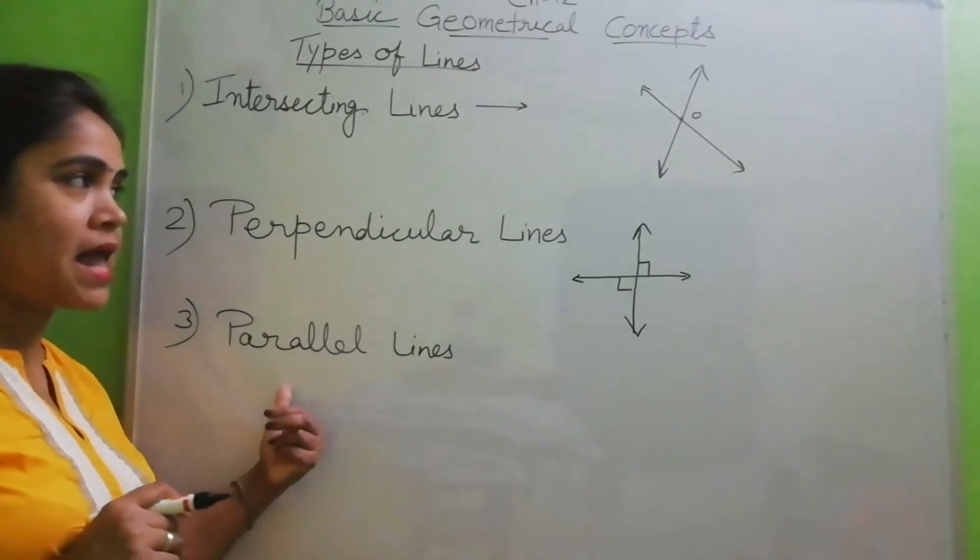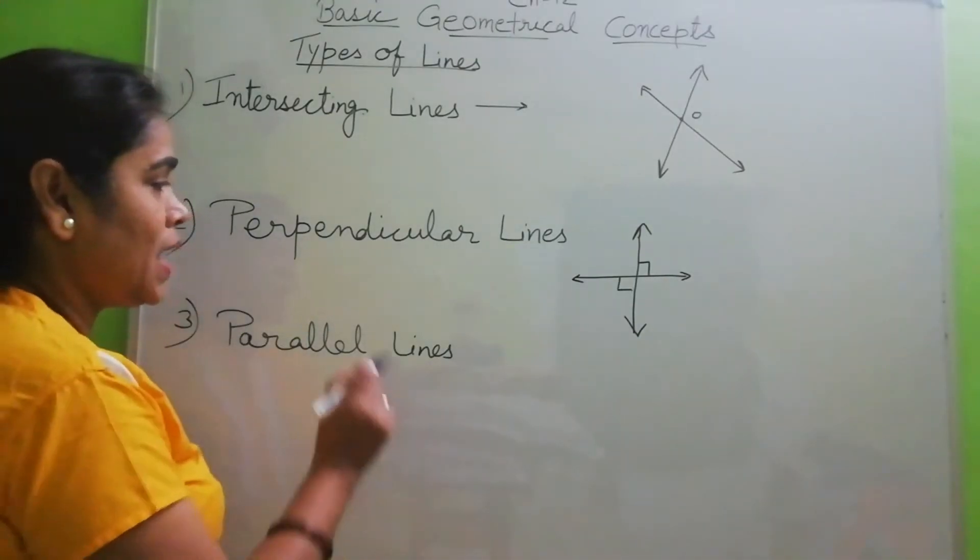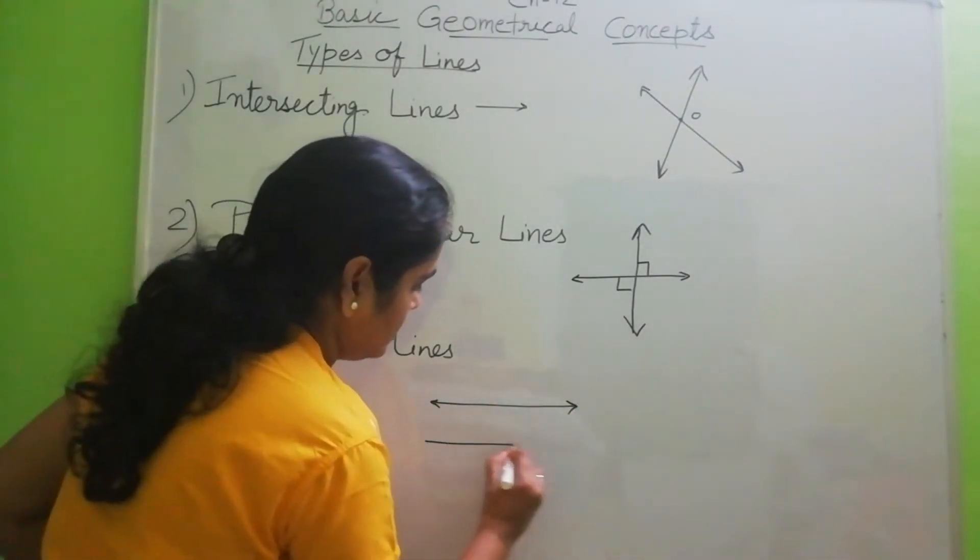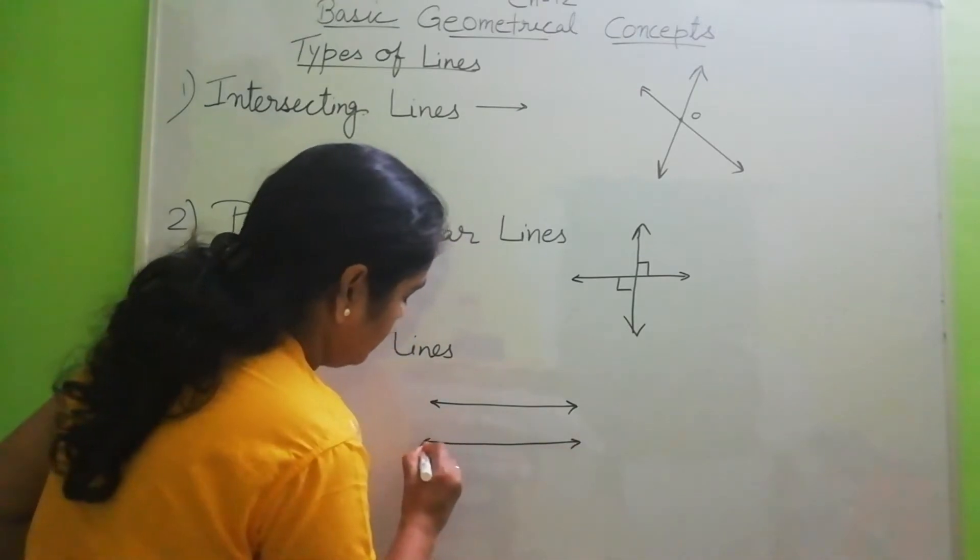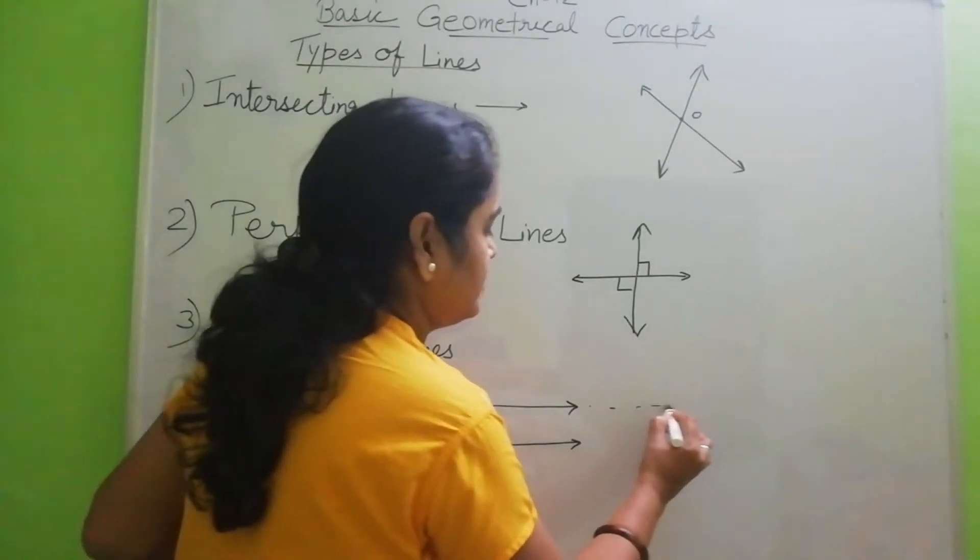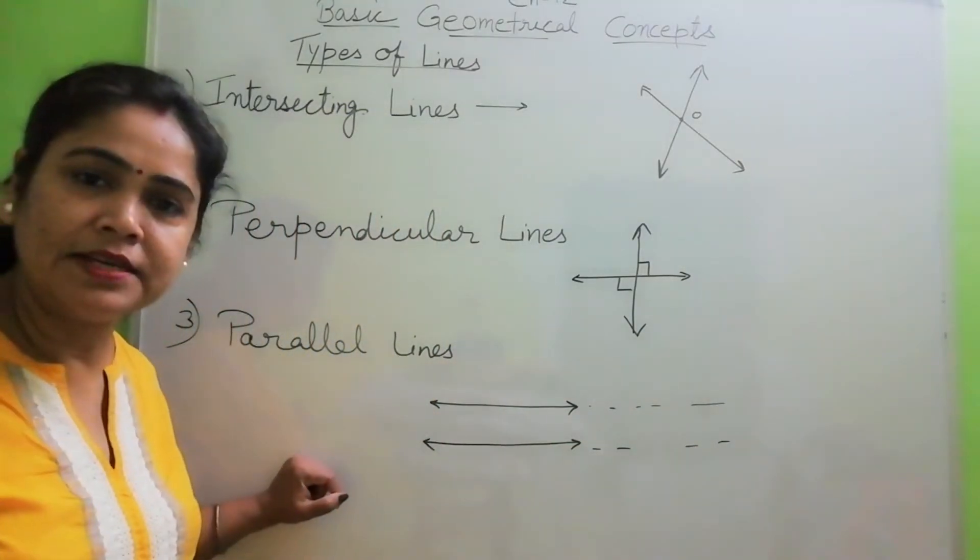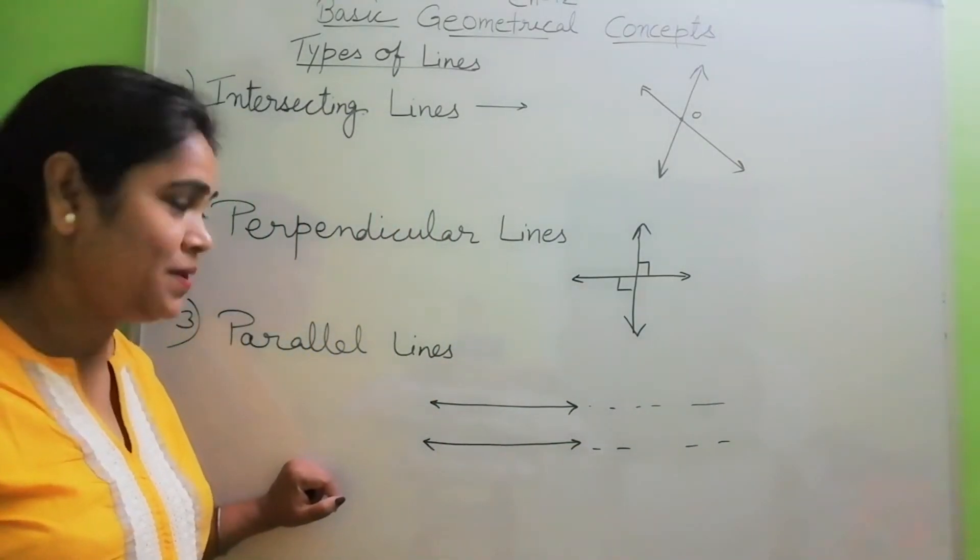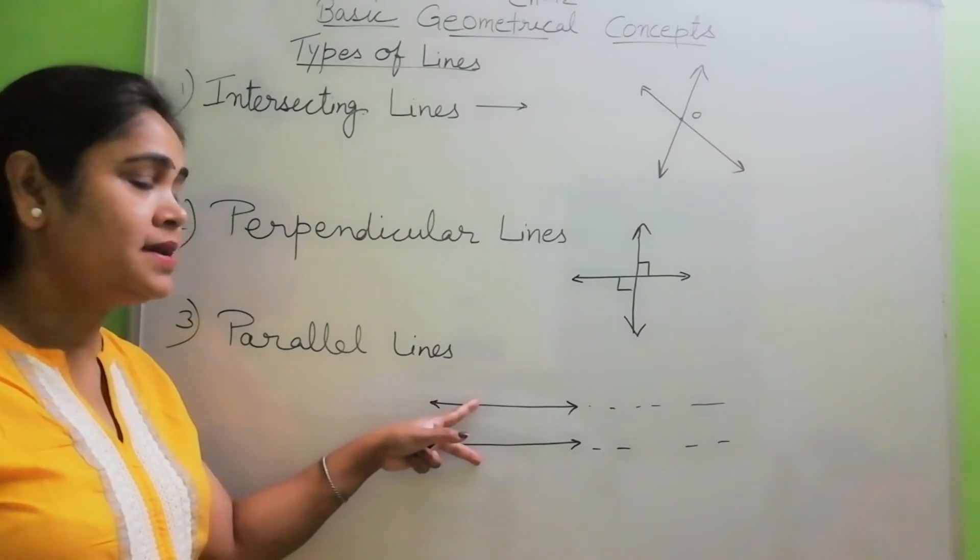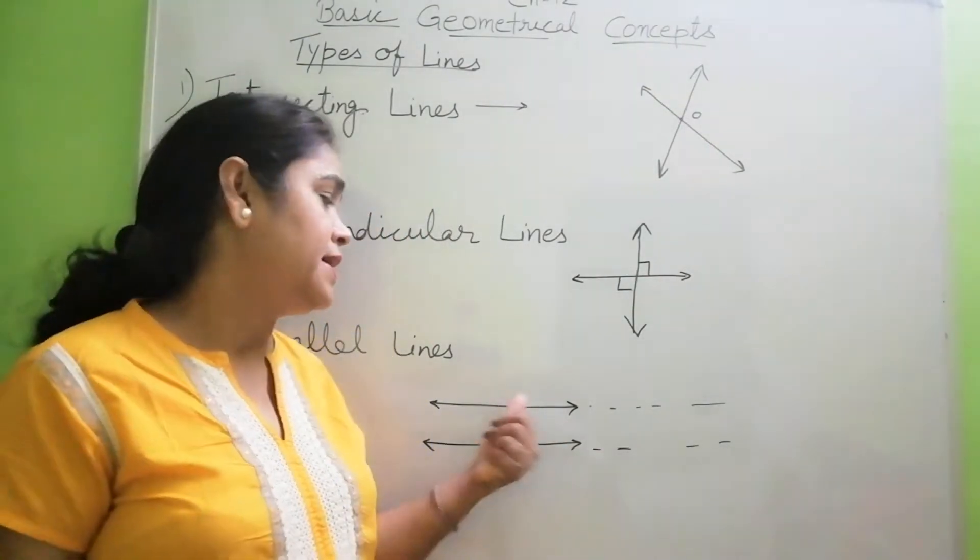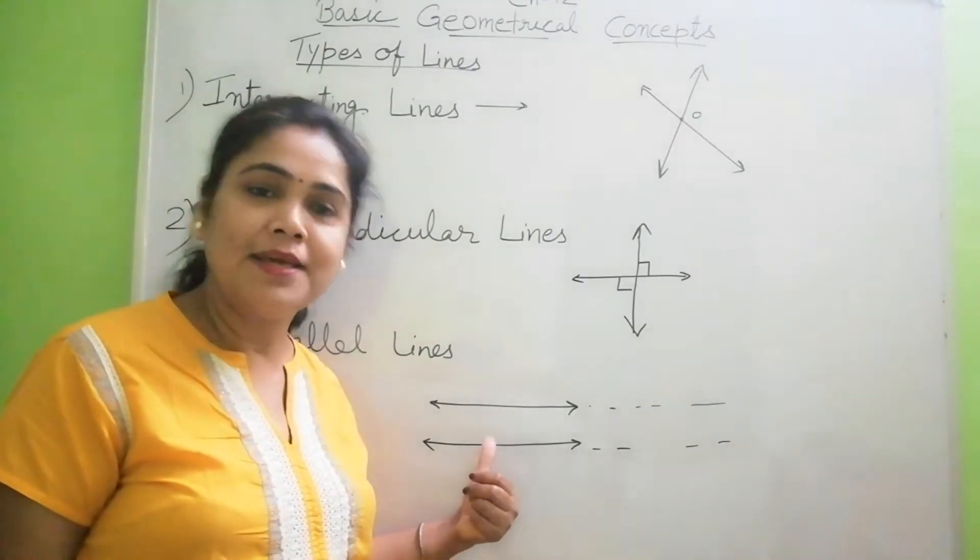And parallel lines, when two lines, straight line. Suppose I am extending this line. Will they intersect each other at any point? No. So when two lines never intersect each other at any point, they are called parallel lines.